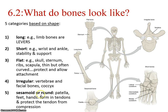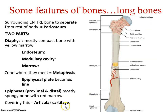Sesamoid bones happen to be round — the patella is very round — and some can be found in the hands too. They form in tendons, so they're not held by ligaments directly to another bone; they're surrounded by tendons. They help protect that tendon from compressing and damaging, so they have a very special and different role.